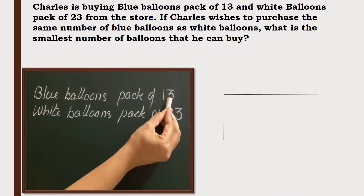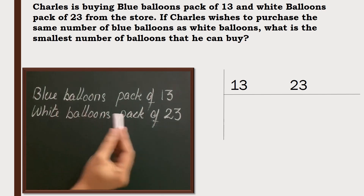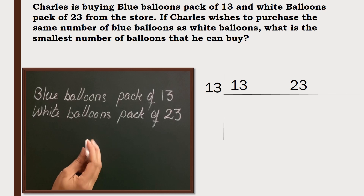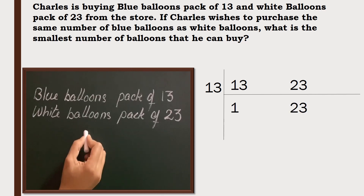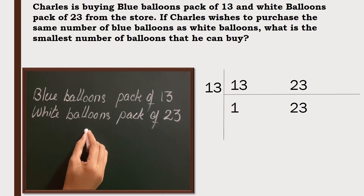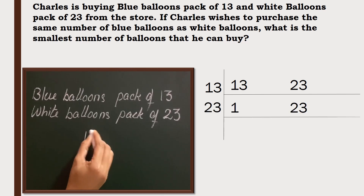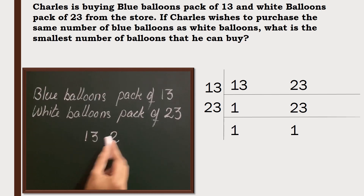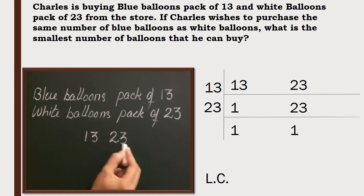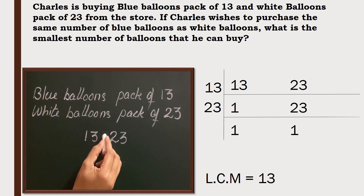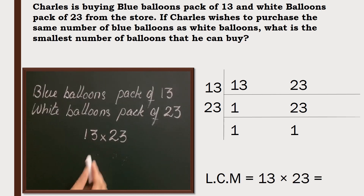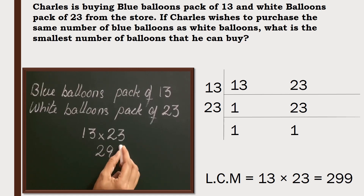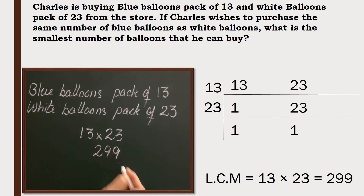Word problem: there are 30 blue balloons in a packet and 23 white balloons. If Charles has to buy the same number of each color, what is the smallest number he has to buy? To find that, we need the LCM of 13 and 23. They are prime numbers, so multiply: 13 into 23 is 299. Charles has to buy 299 balloons.